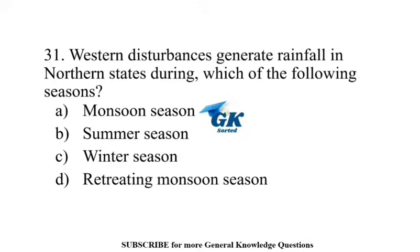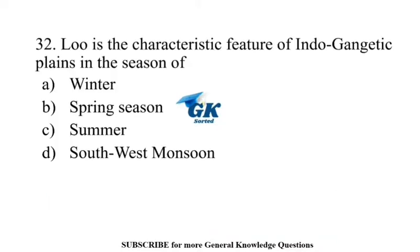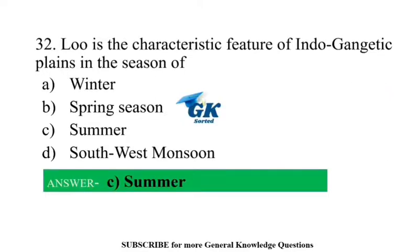Western disturbances generate rainfall in northern states during which season? Winter season. Loo is the characteristic feature of the Indo-Gangetic plains in the season of summer.